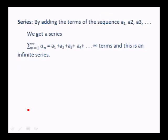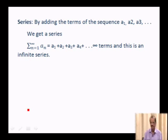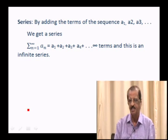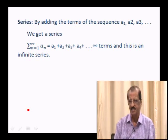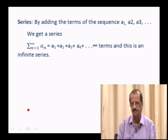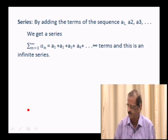Series: by adding the terms of a sequence a1, a2, a3, etc. we get a series. Sigma n = 1 to infinity: a1 + a2 + a3 + ... + an, etc., up to infinite terms — this is an infinite series.